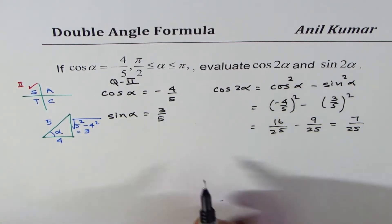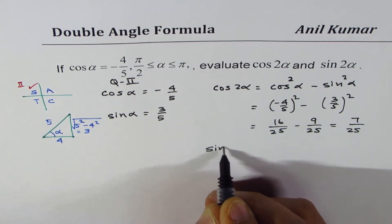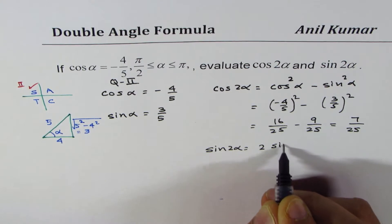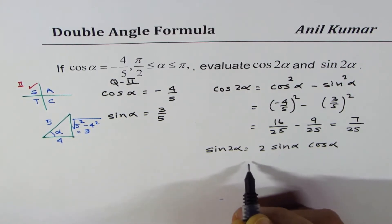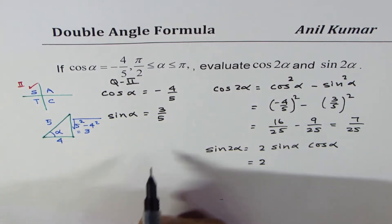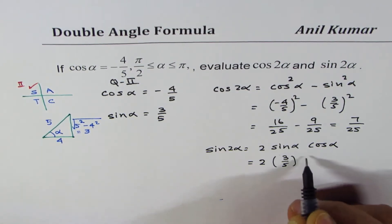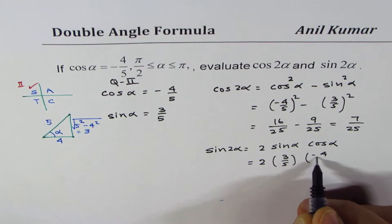Similarly, let us find sine 2 alpha. Sine 2 alpha is 2 sine alpha, cos alpha. Direct application of the formula, 2 times 3 over 5 times minus 4 over 5.